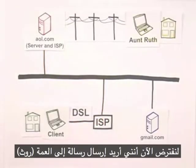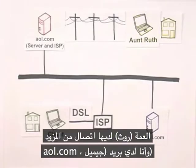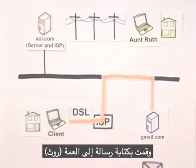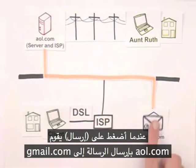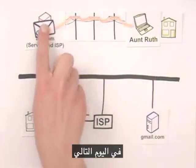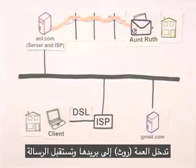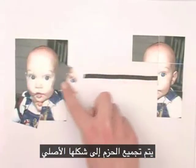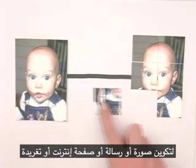Now let's say that I want to send an email to Aunt Ruth. Aunt Ruth has AOL dial-up from home, and I've got a Gmail account. I log onto Gmail.com and compose a message to Aunt Ruth's email address, auntruth@AOL.com. Once I click send, Gmail.com sends the email to AOL.com. The next day, Aunt Ruth dials into AOL's servers and retrieves the email. Whenever an email, picture, or web page travels across the Internet, computers break the information into smaller pieces called packets. When information reaches its destination, the packets are reassembled in their original order to make a picture, email, web page, or tweet.